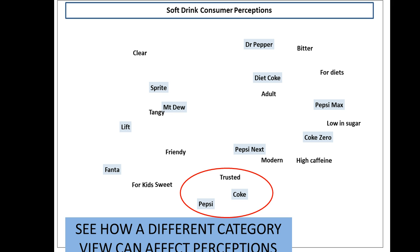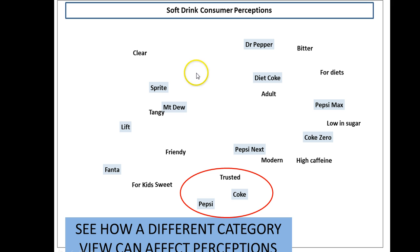We can also see how a different category view can affect perceptions. What I have done here is removed water from the data set and re-run it just using Softdrinks. We have a slightly different map produced because water is no longer here. As a result, the Trusted dimension has shifted right down. So when we only look at the Softdrink market, we can see a different view — as the consumer considers a broader set of indirect competitors, such as water and juice, they will get a different view.